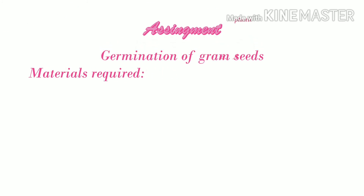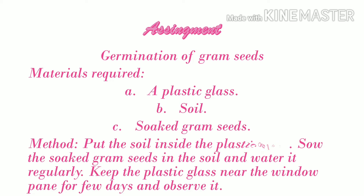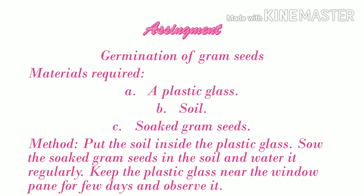Assignment — Germination of gram seeds. Materials required: a plastic glass, soil, soaked gram seeds. Method: put the soil inside the plastic glass, sow the soaked gram seeds in the soil and water it regularly, then keep the plastic glass near the window pane for a few days and observe it.